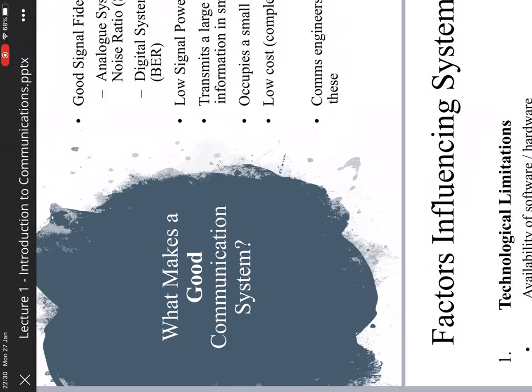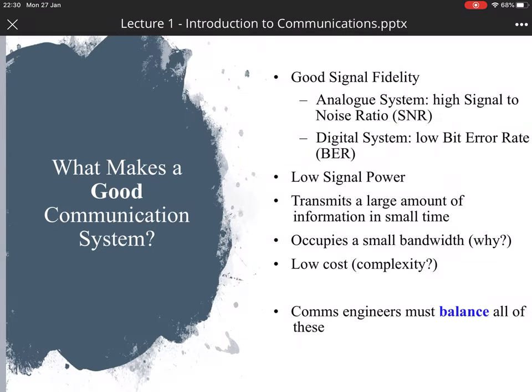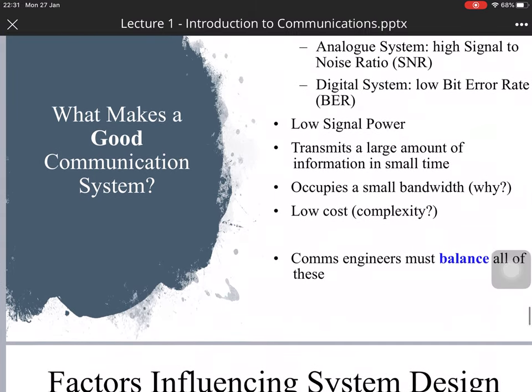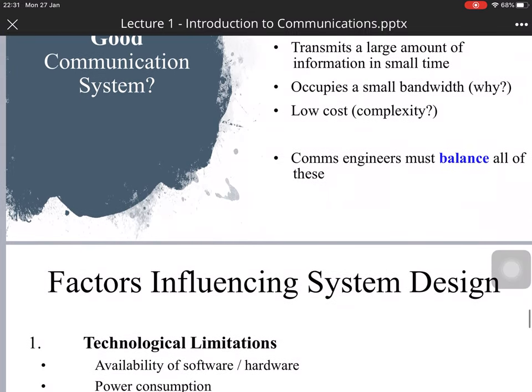We need good signal fidelity — high fidelity means high quality. For analog signals, we want a high signal-to-noise ratio. For digital systems, we need a low bit error rate. Low signal power means the system may last longer, and we want to convey a large amount of information in a small amount of time, with no waste of energy.